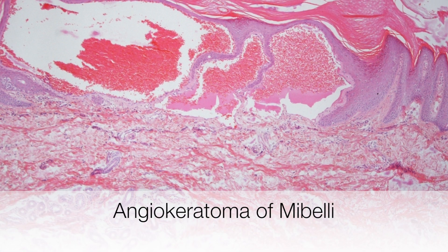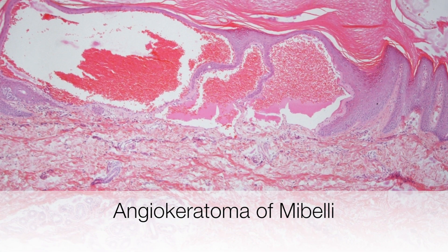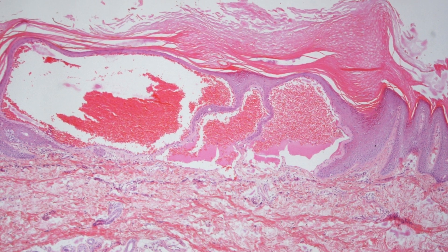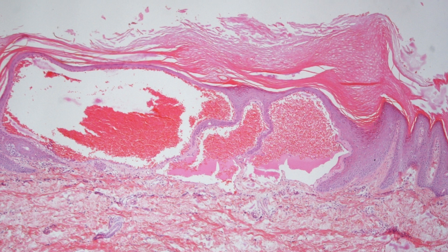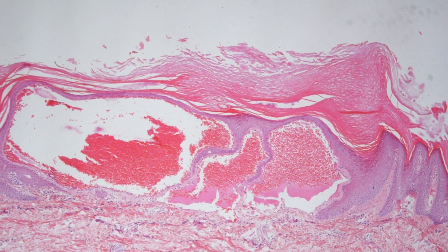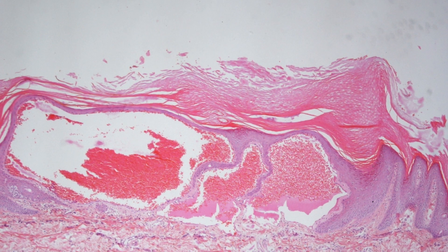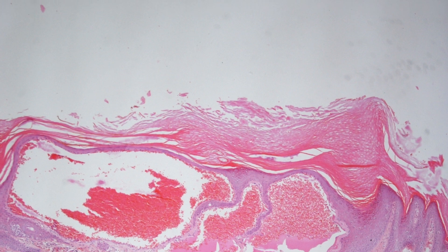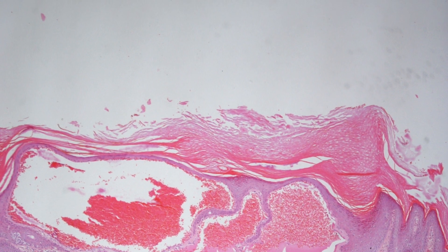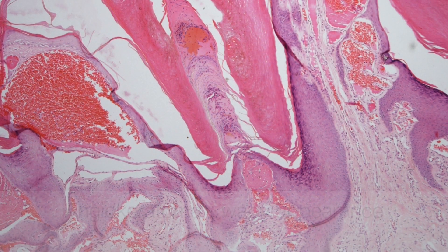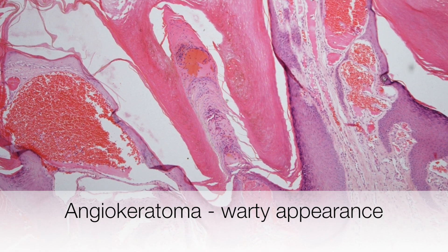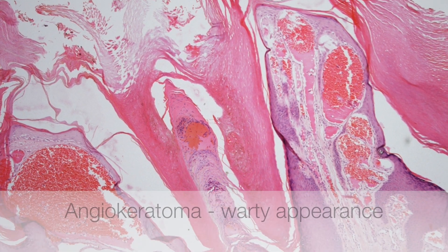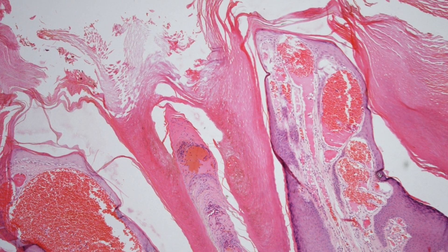This is a low power view of an angiokeratoma of Mibelli. You can see the dilated capillaries immediately beneath the epidermis with overlying hyperkeratosis. Here you can appreciate the rather warty appearance of this angiokeratoma.